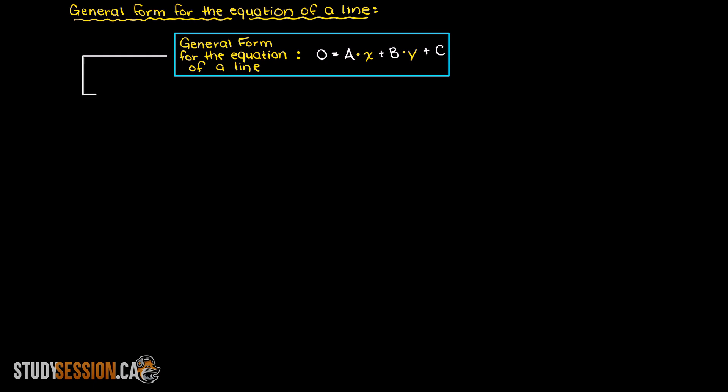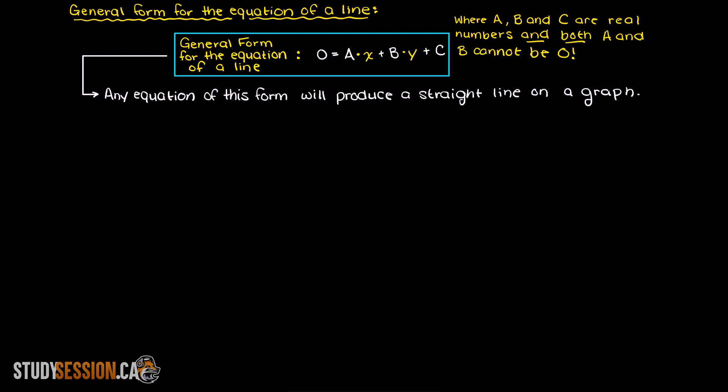Well, this means that any equation that follows this formatting is going to produce a line on our graph. Just note that A, B, and C are any real numbers, and A and B cannot both be zero.